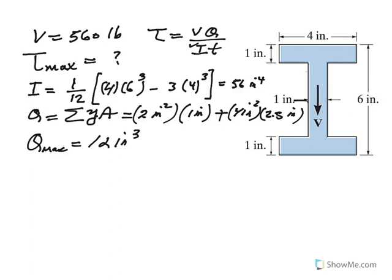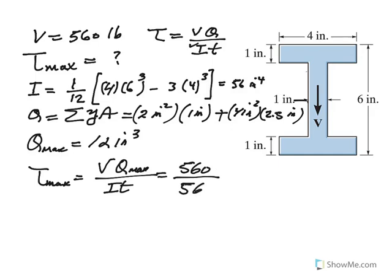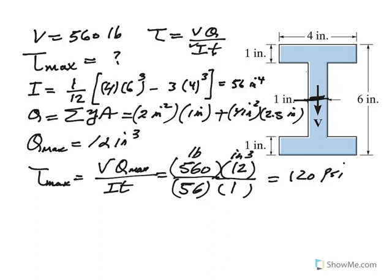We're ready to apply the equation. Let's calculate tau max. Tau max would be VQ over It, so this is Q max of course. V I picked to be 560 pounds. Now you see because I was 56, I can get a ratio of 10. Q max is 12 inches cubed, and t is this thickness here, 1 inch. So this comes out to be a nice 120 PSI. The units work out to PSI because this is pounds, this is inch cubed, this is inch to the fourth, and this is inches.